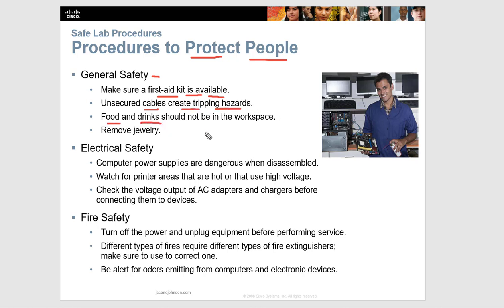With food and drinks, the best thing to do is just not bring any type of food or drink into your workspace. When you're working with electrical devices, that includes water. Don't bring your Doritos and Mountain Dew into your workspace — leave those somewhere else. Water can spill into an electrical device and harm it or electrocute you.